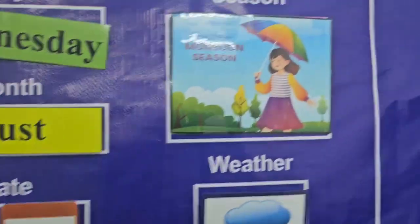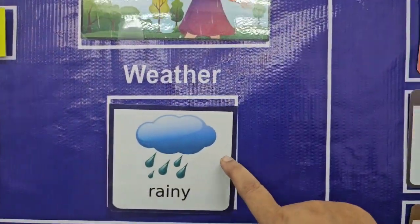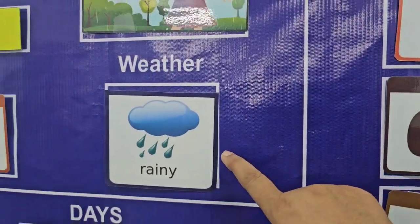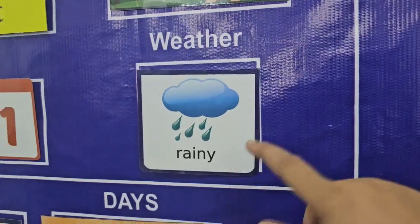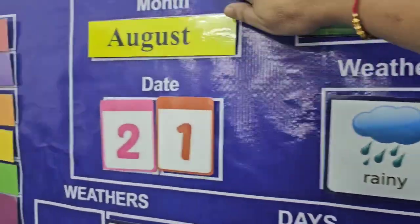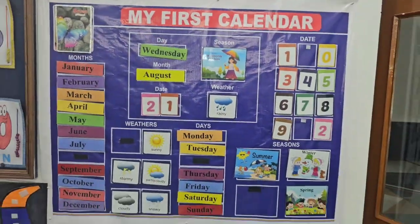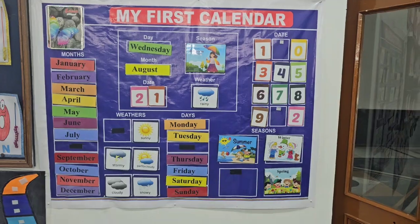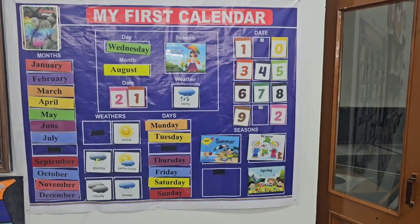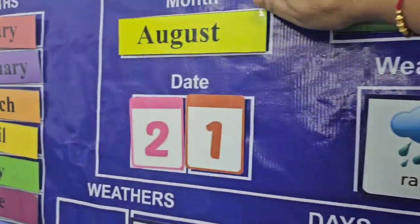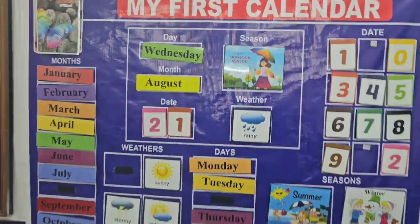The season is monsoon season. How is the weather today? Rainy day. So our calendar is set. Today is Wednesday, today's date is August 21st, we are currently in the monsoon season, and the month is August.